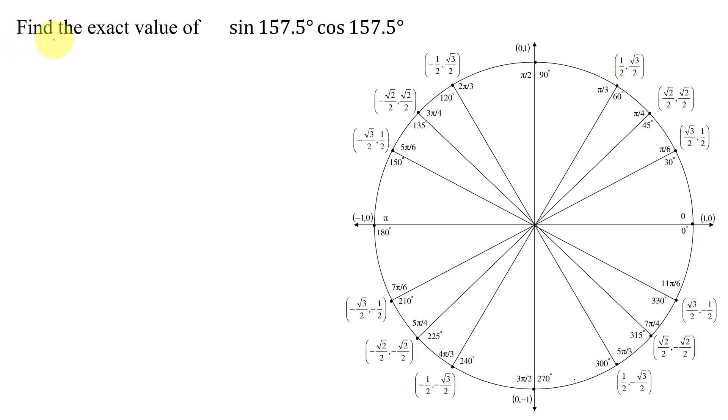In this example, I need to find the exact value of sine of 157.5 degrees times the cosine of 157.5 degrees. Normally, when we see exact value and a trigonometric expression, it means use the unit circle. But if I look on the unit circle, 157.5 degrees is somewhere in here, so I don't have accurate points for that angle. So how are we going to solve this problem?